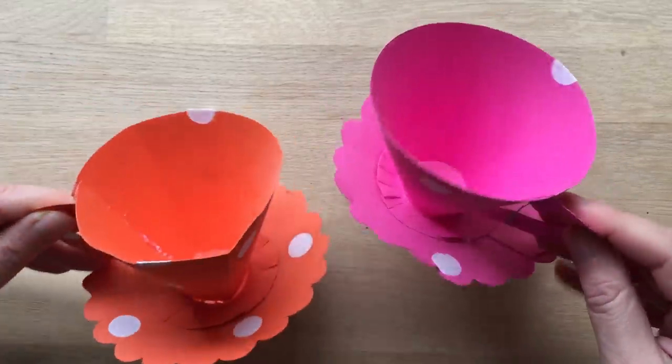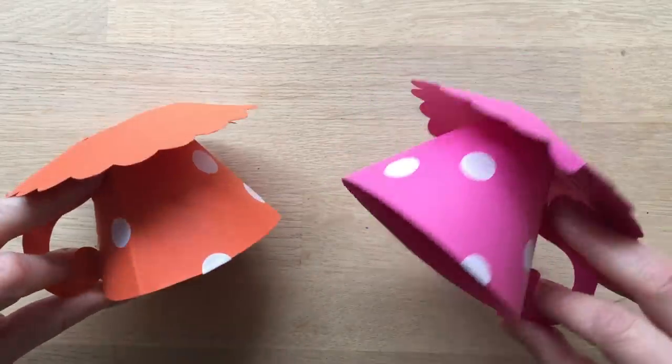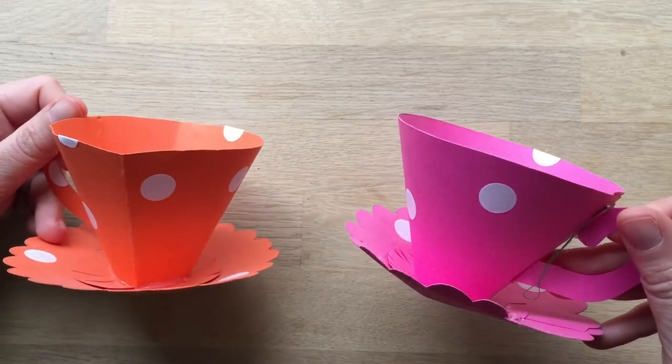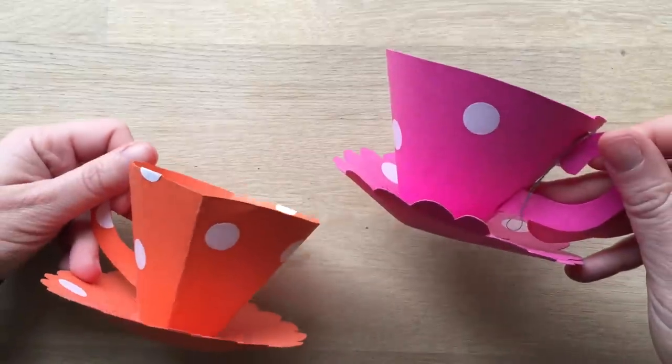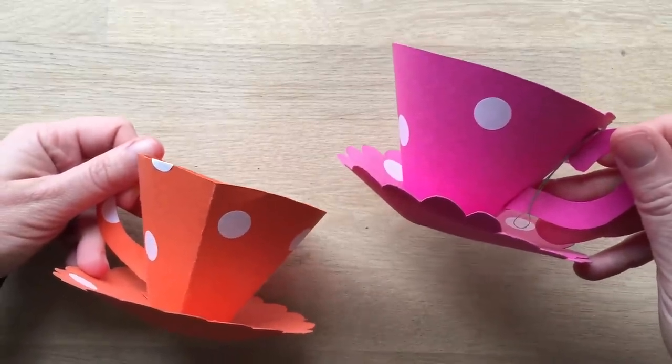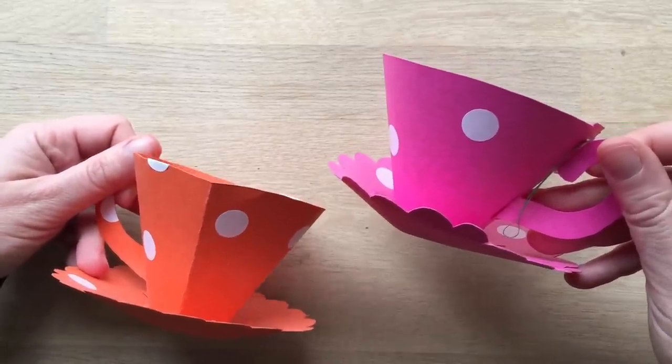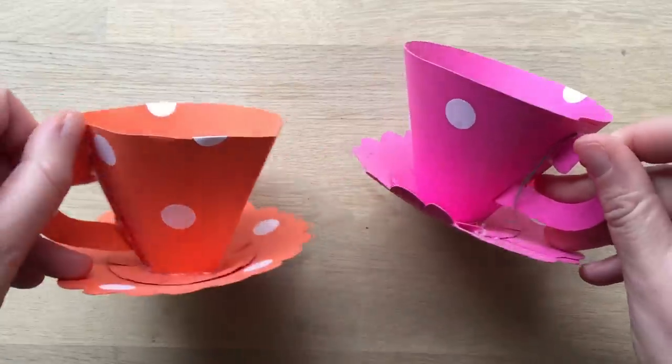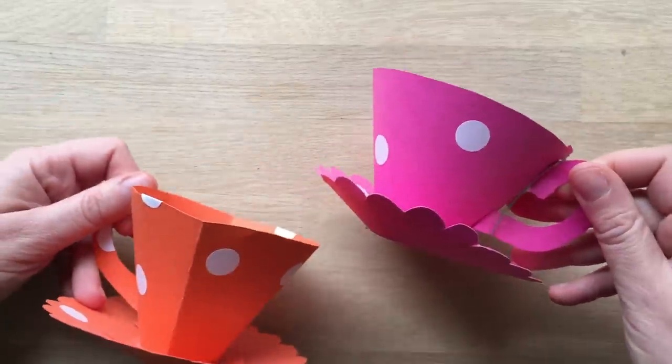Now, I first came across these at my sister-in-law's wedding. She had an Alice in Wonderland themed wedding and these were all hanging from the ceiling and they looked amazing. So if you love Alice in Wonderland, if you're having a party or if you just want to make these for your kids to play with, it doesn't matter what age you are. Little kids will enjoy it, teenagers can decorate their rooms and adults can get married.